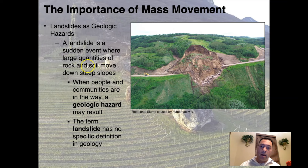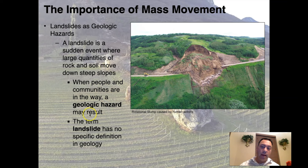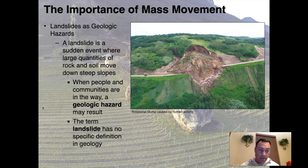A landslide is a sudden event where large quantities of rock and soil move down steep slopes — 'sudden' can also mean unexpected. When people and communities are in the way, a geological hazard results. People need to take notice because land always wins. Once something as large as a landslide starts building momentum, there's very little we can do to stop it — the best thing is simply to get out of its way.